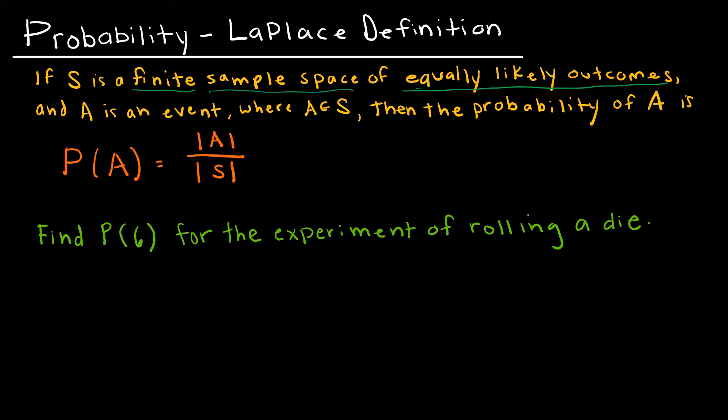Sample space is all of the possible outcomes. For instance, when I roll a die, the possible outcomes are 1, 2, 3, 4, 5, 6. That would be S, the sample space.